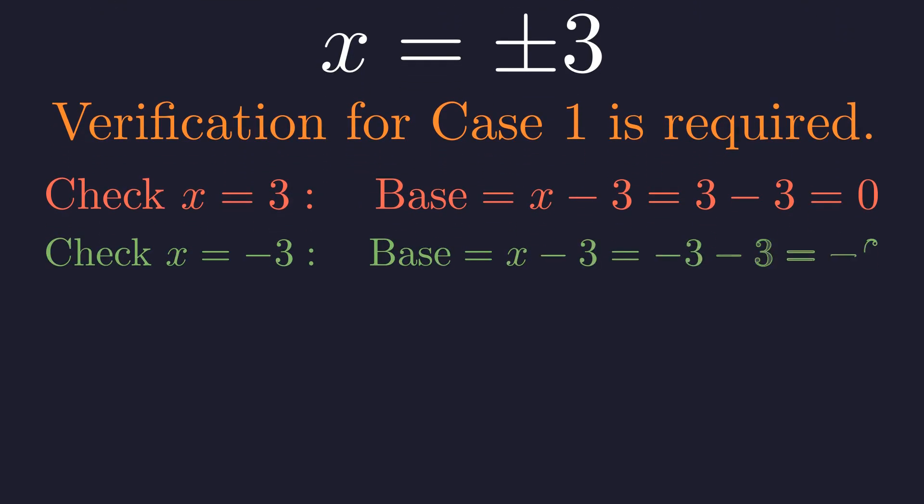Next, let's check x equals negative 3. The base becomes negative 3 minus 3, which is negative 6. Since the base is not 0, this is a valid solution. We've found our first answer.